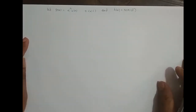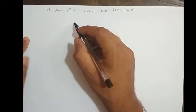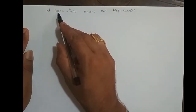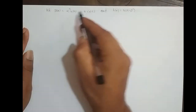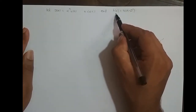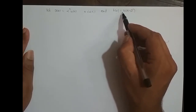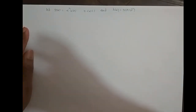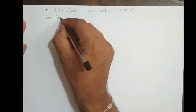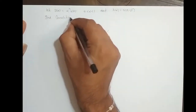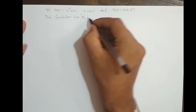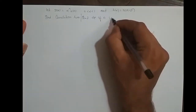In this video we will take up one more problem on convolution sum of an infinite line sequence. The input to the system is x(n) = α^n · u(n), where α is between 0 and 1, and the impulse response of the system is h(n) = u(n-2). We need to find the convolution sum, or find the output of an LTI system.